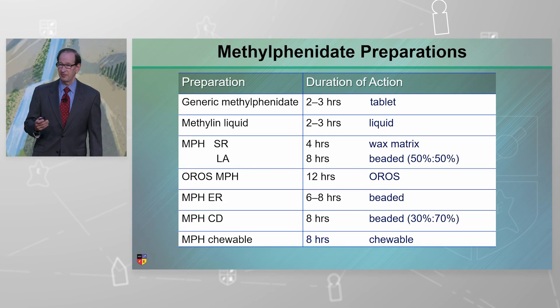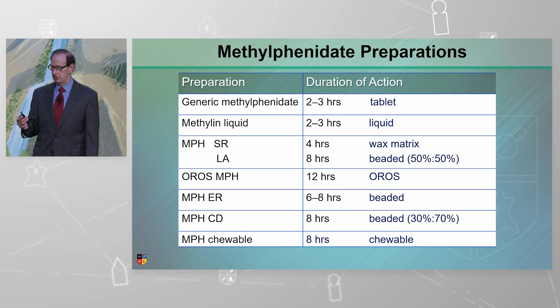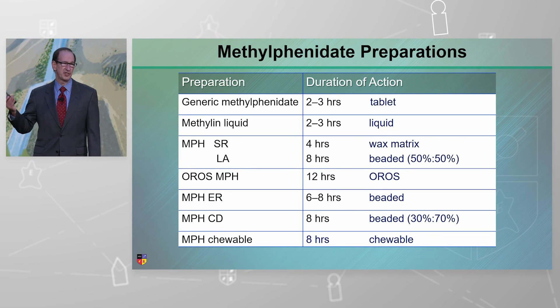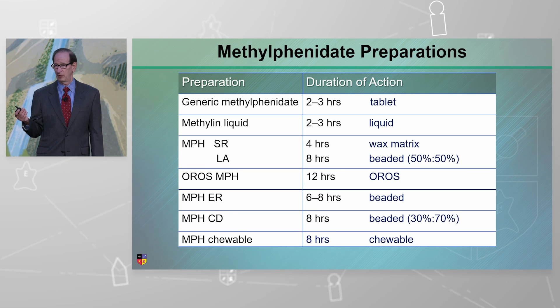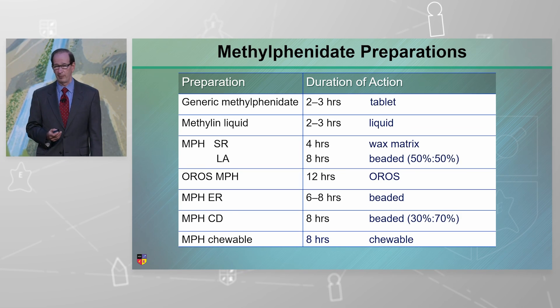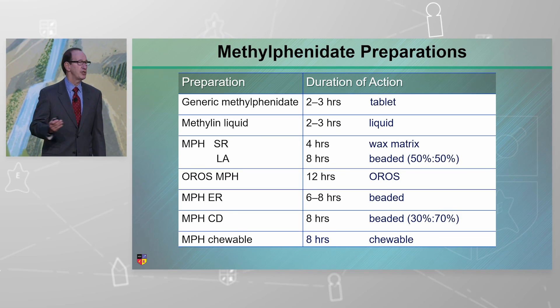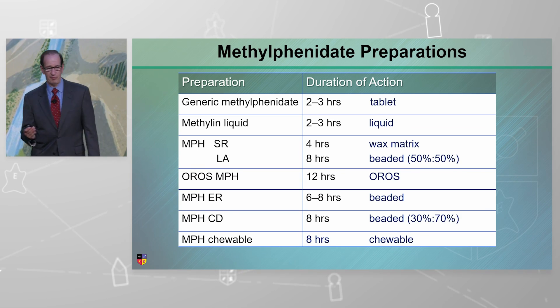These are the methylphenidate preparations. There are over 30 of these stimulant preparations — you can't possibly remember all of them. So how do you choose them?